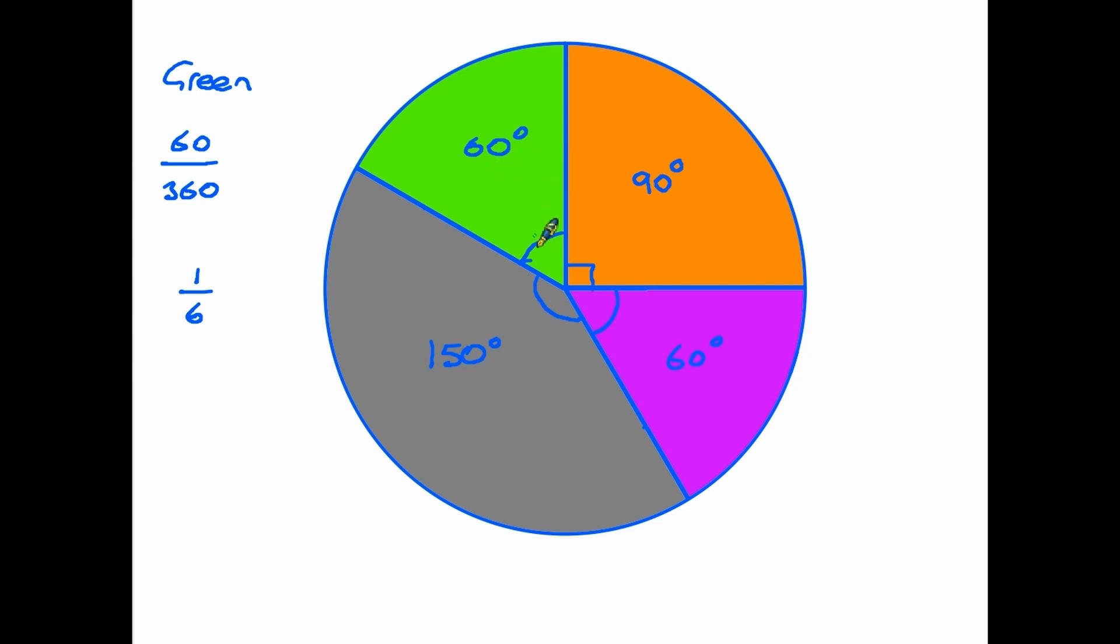So all we need to do is simplify this fraction down, and we discover that green cars were chosen by one sixth of the people. Similarly, if we look at the orange sector here, then maybe this is even simpler. But we have 90 degrees, so that is expressed as 90 over 360, which equals one quarter. Therefore we can say that one quarter of the people chose the orange car, and the same can be done with the other sectors. So changing a sector, the degrees, into a fraction simply means stating that amount over 360 and simplifying the fraction.